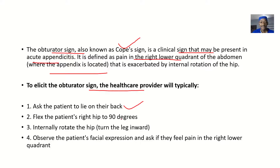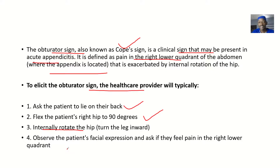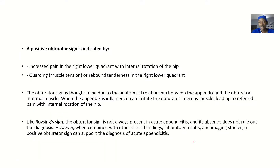To elicit this sign, the healthcare provider asks the patient to lie on their back, then flexes the patient's right hip to about 90 degrees — note it is the right hip, not the left, as the appendix is on the right side. You then internally rotate the hip. While doing this, you observe the patient's facial expression, because patients have a high threshold for resisting pain. If they show a pained facial expression during internal rotation in the right lower quadrant, the sign is positive.